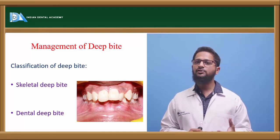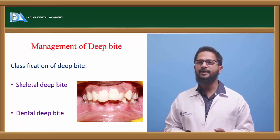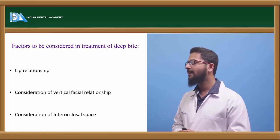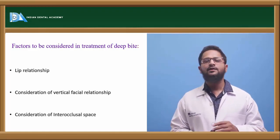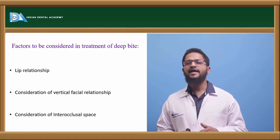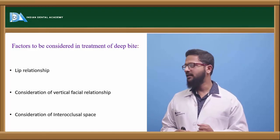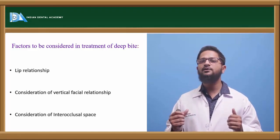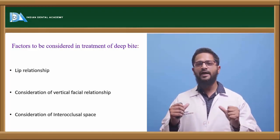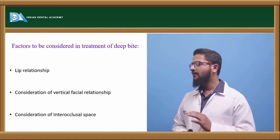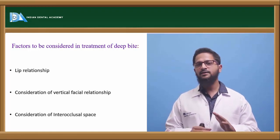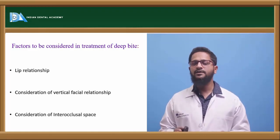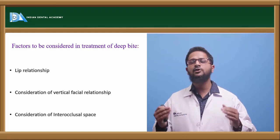There are certain factors to consider while planning treatment of deepbite. First is lip relationship — if there is excessive gingival exposure during smiling, meaning a gummy smile is present, then intrusion of the anteriors is preferred rather than extrusion of molars, which will also improve the patient's appearance. If the lip relationship is normal — meaning normal gingival exposure of 2-3 mm during smile — then the incisors have erupted normally and there is some fault with the molars; hence extrusion of the posteriors will be done. Second factor is consideration of vertical facial relationship — when correcting deepbite by using anterior bite planes, it can cause further eruption of posteriors and downward-backward rotation of the mandible. If rotation of the mandible is already present, further extrusion of posteriors should not be done.